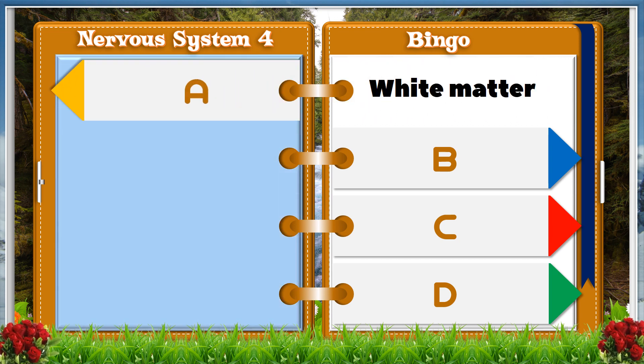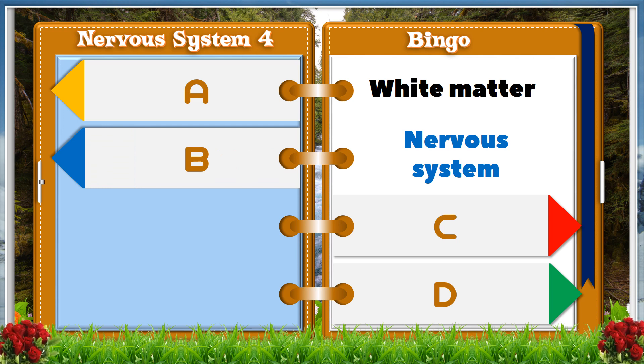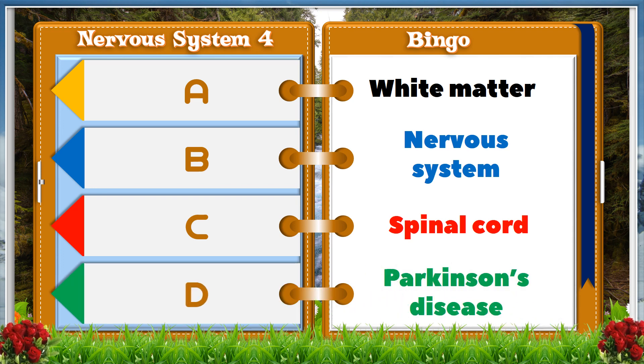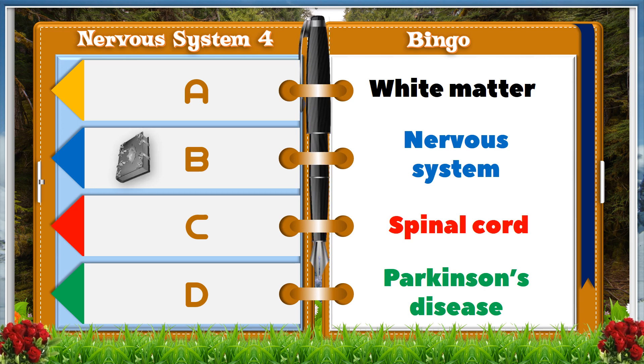A. White matter. B. Nervous system. C. Spinal cord. D. Parkinson's disease. And the answer is B. Nervous system.